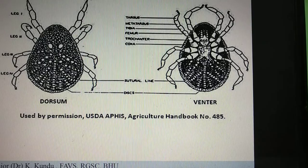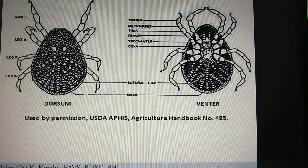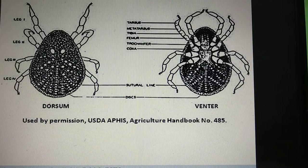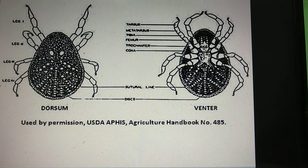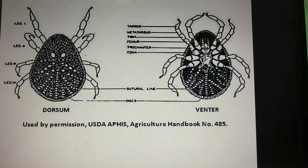On the ventral aspect, you can see the capitulum. The capitulum is the base on which the mouth parts lie. The mouth parts are the hypostome, chelicerae, and the pedipalps or palpi. As you can see here, the capitulum and the mouth parts are present anteriorly but ventrally, so you cannot see them when looking from the dorsal aspect.